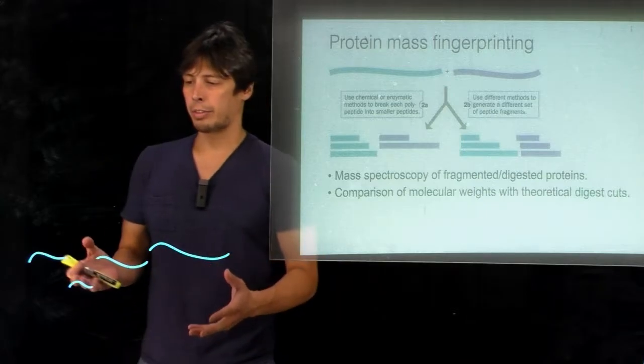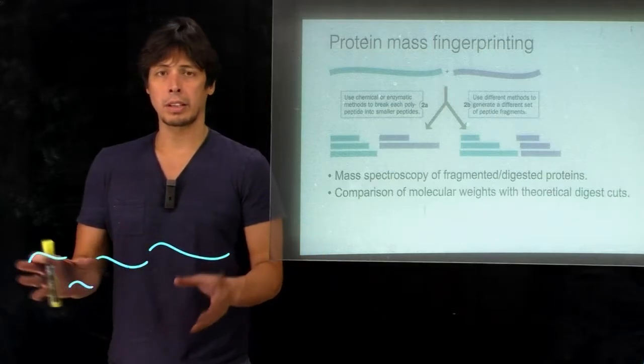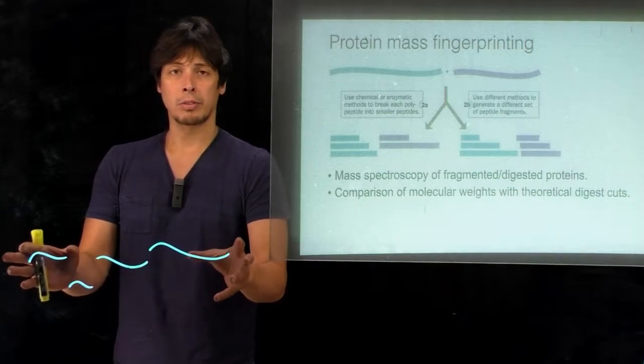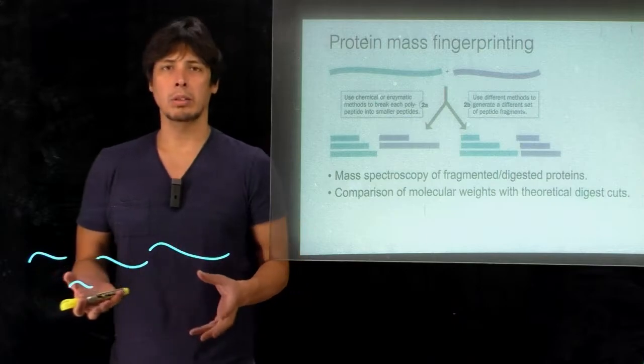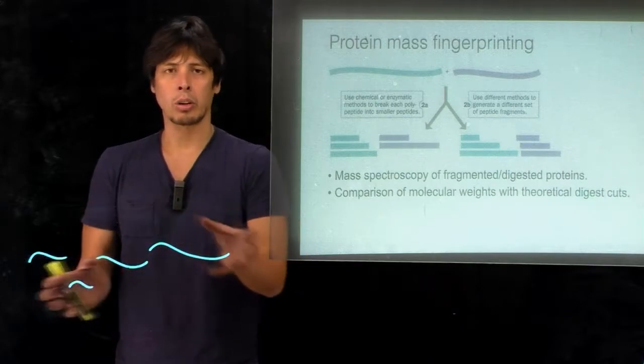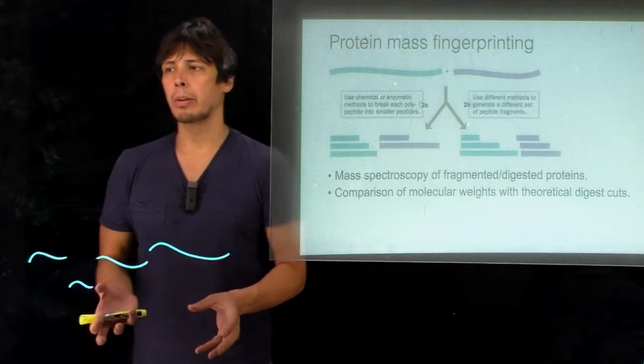Now finally, if we're able to identify the sequences of a bunch of fragments for a protein that we don't know, how do we put this together to actually figure out what order all these fragments go in?